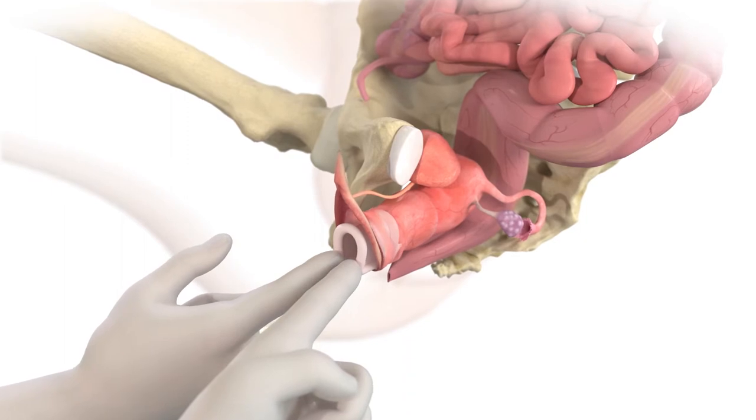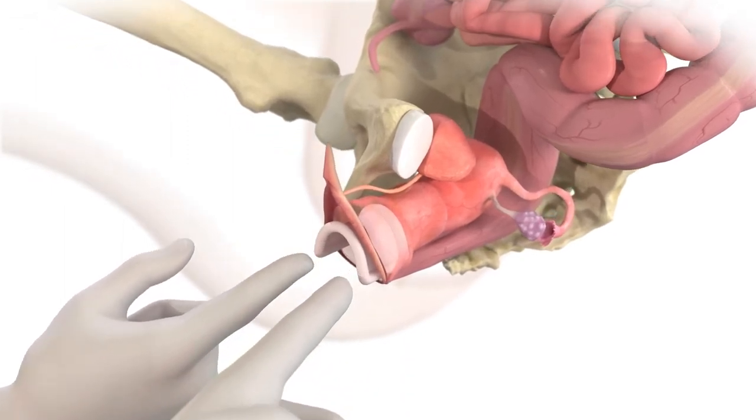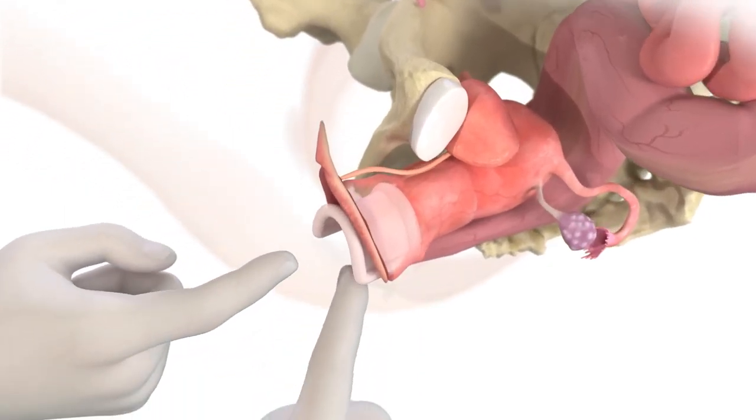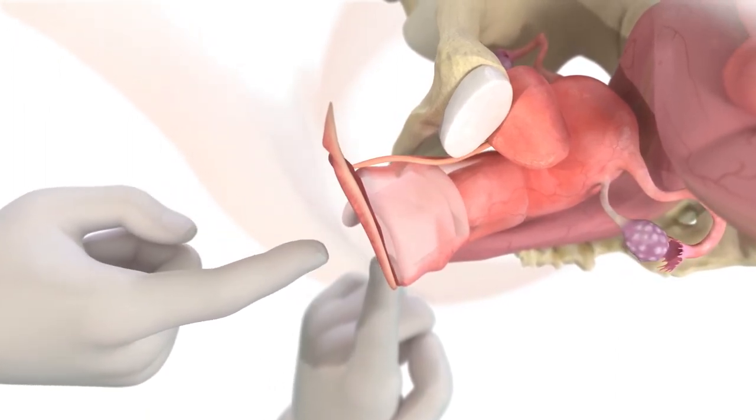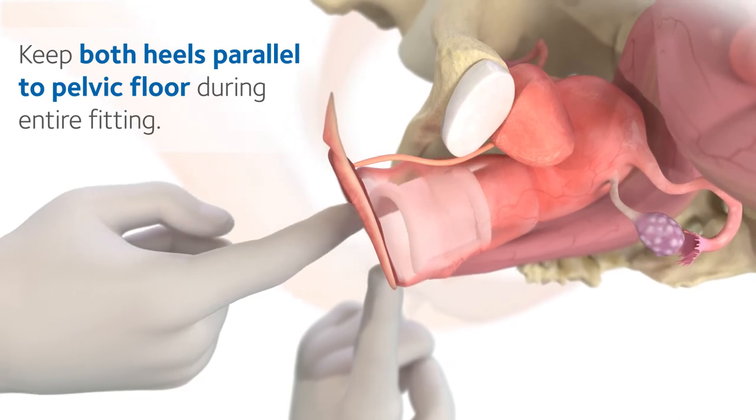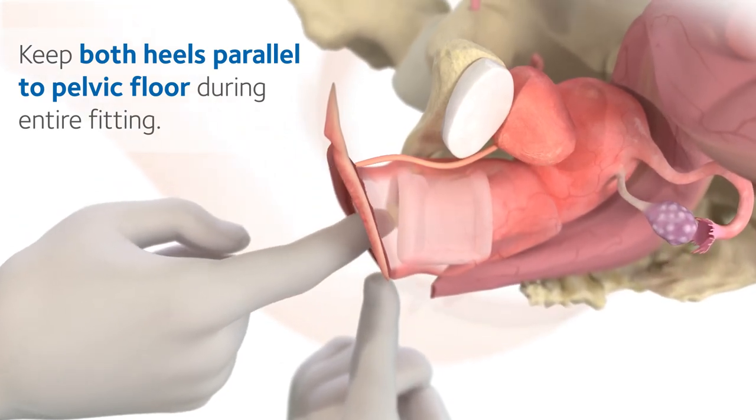Push the pessary past the introitus and expand the pessary using two fingers. Gradually push the right heel back, keeping the left heel forward. Keep both heels parallel to the pelvic floor during the entire fitting.